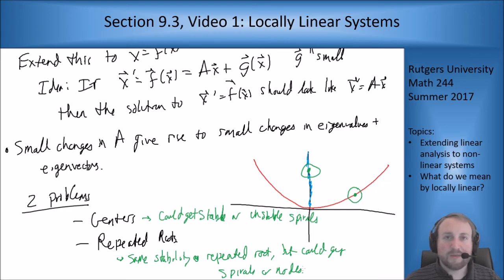Depending on which way you nudge it you're going to get either spirals or nodes. So these two end to being our issues that we'll come to and you'll see if you look at the table in the back of the section when you were talking about the sort of theorem that comes from this, these are the two issues of the centers and the repeated roots that end up causing things where things can change when you go from the linear to non-linear system. So how can we use this?